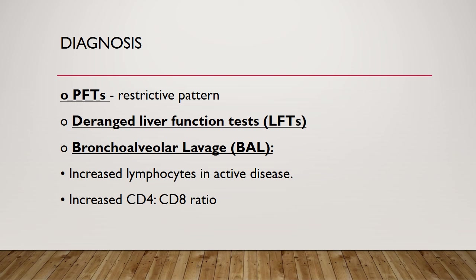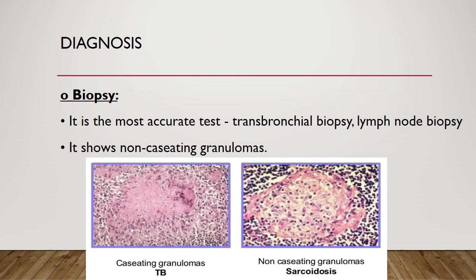Pulmonary function tests will show a restrictive pattern due to fibrosis. There will be deranged liver function tests in active disease, increased lymphocyte count, and an increased CD4 to CD8 ratio. Biopsy is the most accurate test; it can be obtained by a transbronchial approach or from a lymph node and will show non-caseating granulomas with no necrosis — unlike caseating granulomas seen in infective diseases like tuberculosis.